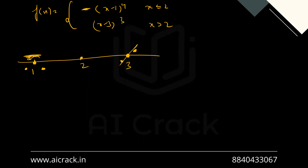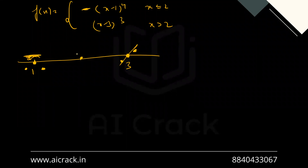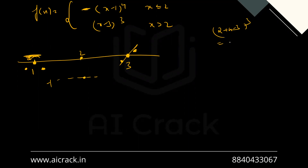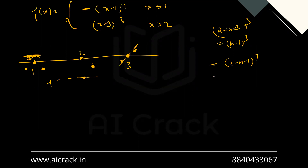Now let's talk about x equals two. At x equals two, the value would be minus one raised to the power four with a negative sign, so that would be minus one. If we go towards the right side using two plus h, we get two plus h minus three raised to the power three, which is h minus one raised to the power three — a value slightly lesser in magnitude than minus one, so it comes a little higher. Similarly, for two minus h, we get minus one minus h raised to the power four with a minus sign — again slightly lesser in magnitude than minus one, so it also comes a little higher. This gives us a local minimum at x equals two.